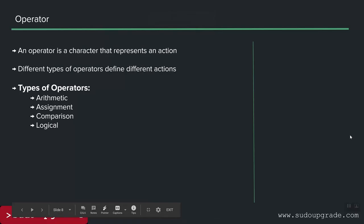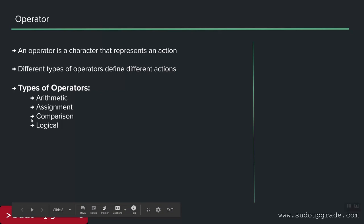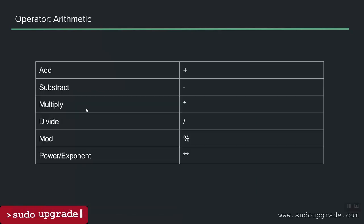Next is operators — a character that represents a particular action. There are different types: arithmetic, assignment, comparison, and logical operators. Arithmetic operators everyone should be familiar with: addition, subtraction, multiplication, division, and exponent. These may differ slightly from language to language, but generally speaking this is the format you'd use.